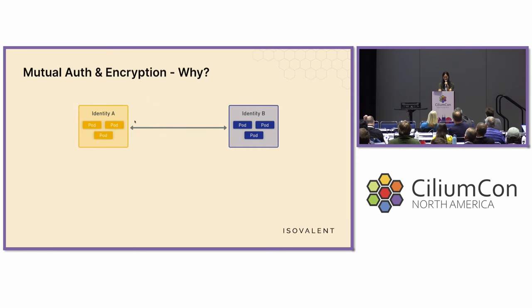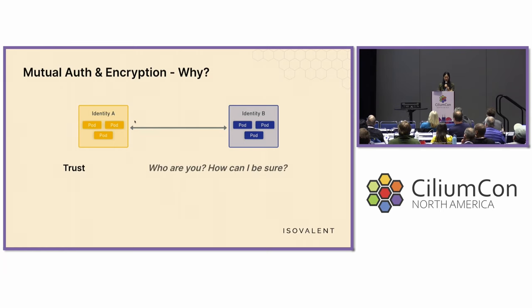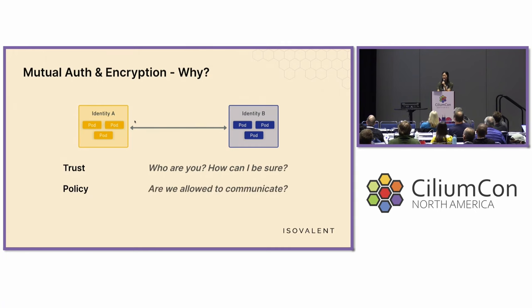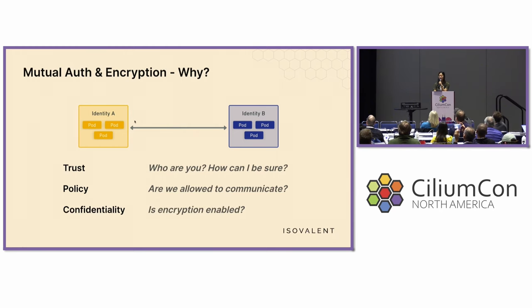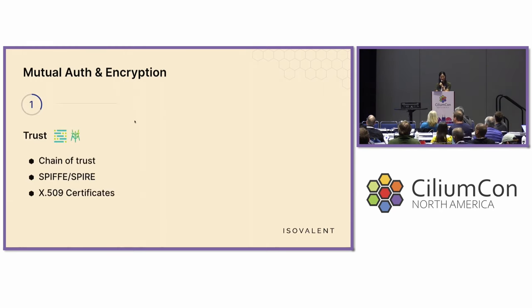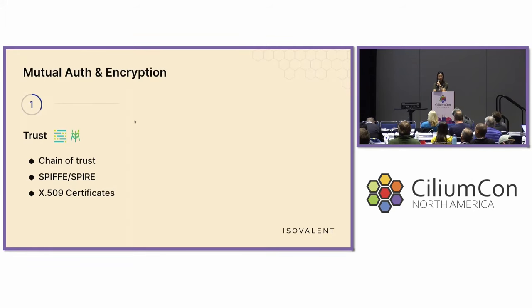Let's go to the business reasons for mutual auth and encryption and the why. Let's say pods with identity A want to communicate with pods with identity B. Some questions should arise before the connection is made: Who are you? How can I trust who you say you are? Are you even allowed to be communicating with each other? And is encryption enabled? With mutual auth and encryption, there is now that trust. We have SPIFFE and SPIRE now being leveraged in Cilium 1.14, which establishes that chain of trust. We now have strongly cryptographic identities being attested for.